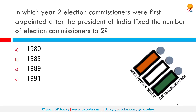In which year were two election commissioners first appointed after the President of India fixed the number of election commissioners to two? The correct answer is 1989. The current commission was established in 1950 with a chief election commissioner appointed. Membership increased on 16th October 1989 to three, with two additional commissioners appointed. That commission ceased on 1st January 1990 when the Election Commissioner Amendment Act of 1989 superseded it, and it continues today in operation.